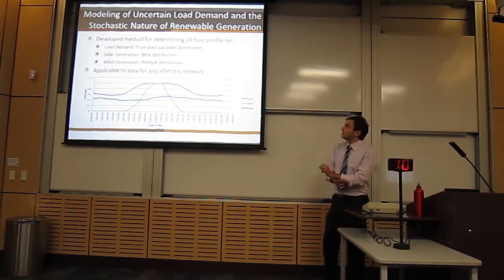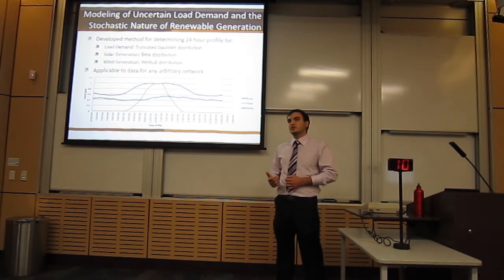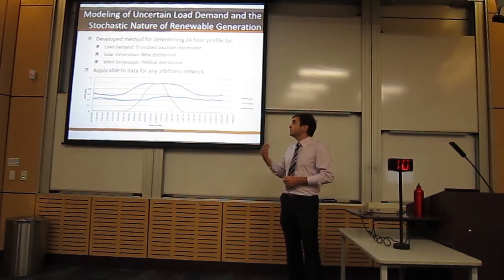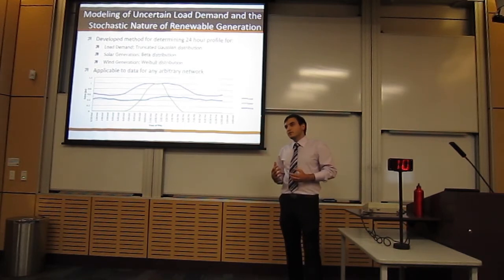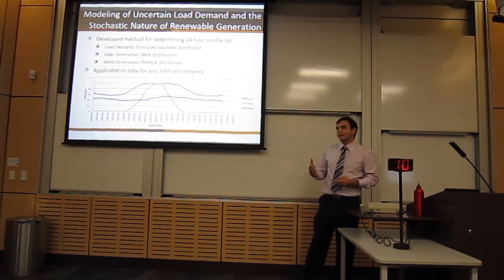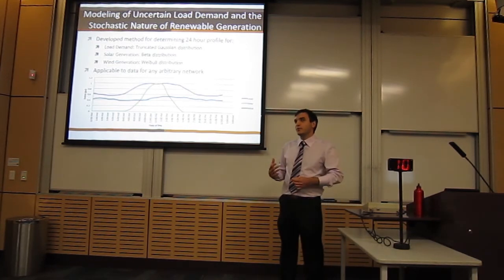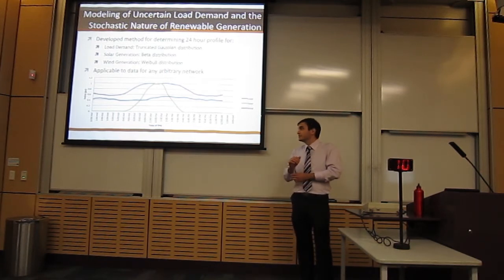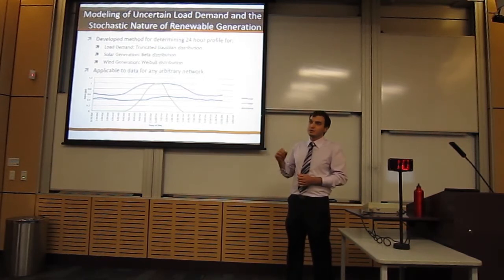To model the uncertain load demand and stochastic nature of renewable generation, I've developed a method for determining typical 24-hour generation profiles using distribution functions for each of the three profiles. For renewable generation, you cannot account for periods such as cloud cover reducing solar output. However, I've proposed a method to develop a typical 24-hour profile consistent over the duration of a year, ignoring these small inconsistencies. This method is applicable for data from any arbitrary network, rather than being developed for a specific single network.